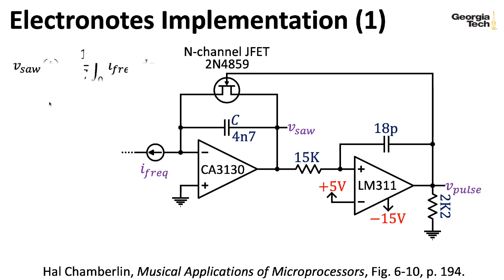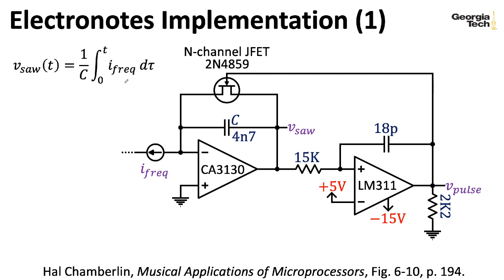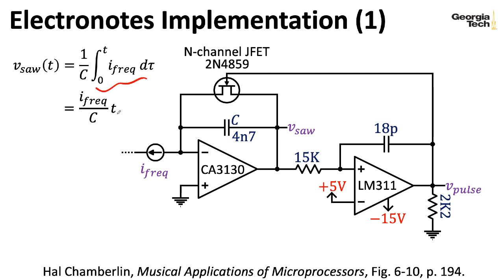Let's do some calculus — not a whole lot. The output of the sawtooth waveform is going to be 1 over C times the integral of the current coming in. I'm assuming the sawtooth wave is zero at t equals zero; if not, you could just add a constant. Because we're assuming the frequency control current is constant, integrating a constant just gives us a t — that constant pulls out in front of the integral.